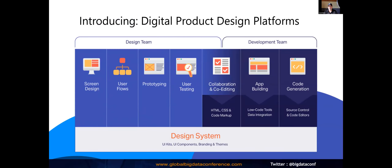When thinking about a digital product design platform, there are multiple aspects. The session will cover the underlying design system and look at screen design, user flows, prototyping, user testing, and usability testing — which the majority of you probably don't do but should be doing. We'll also look at collaboration, co-editing, and app building — leaning toward the developer side. Ultimately, developers really want code that they can use. There's a lot of promise in tools that say they'll help enterprise development teams accelerate product delivery, but after some product demos, you'll be able to make your own decision.